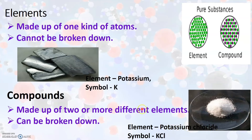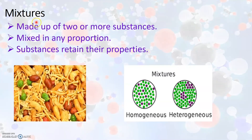Therefore, we can say that compounds are made up of two or more different elements and can be broken down into simpler substances called elements. Mixtures are made up of two or more substances mixed in any proportion. Mixtures are formed when two or more substances exist together without any kind of chemical force acting between them, and the substances retain their individual properties.